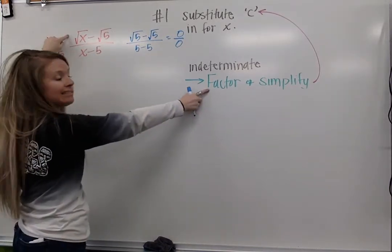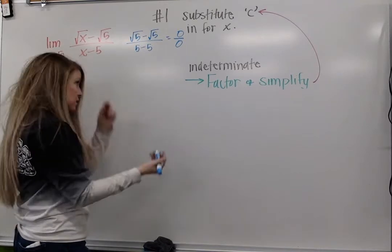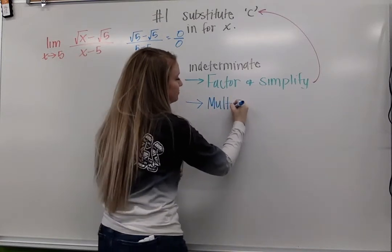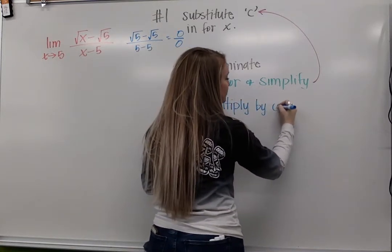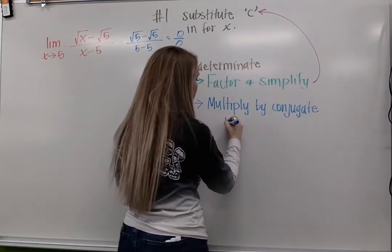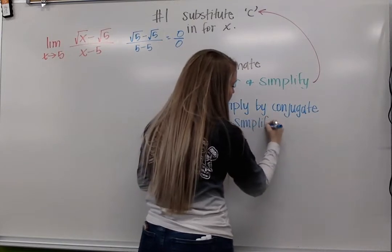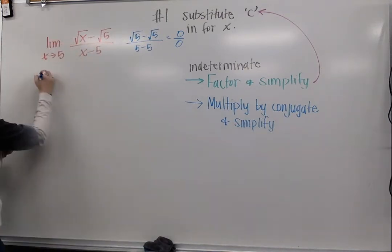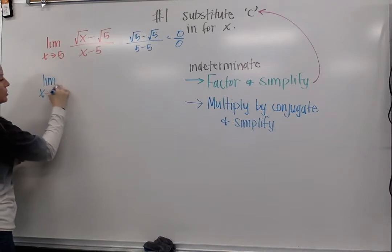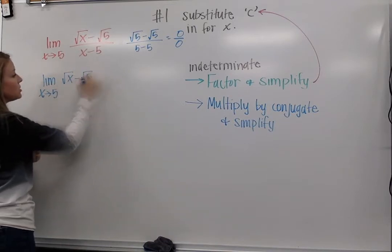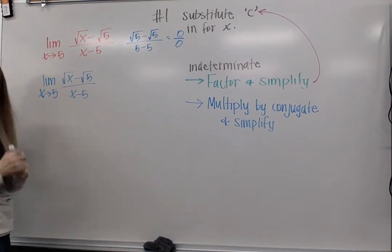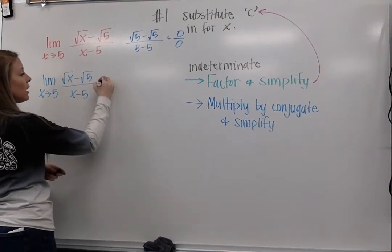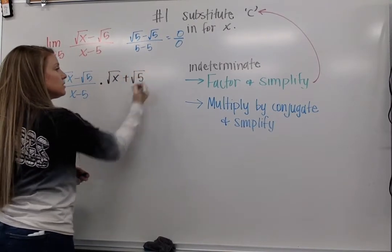In this case, factoring is not going to be a good idea. Because of those square roots — those radicals — I am going to multiply by my conjugate. This is another option: multiply by the conjugate and simplify. If you remember, a conjugate — we're just going to switch our signs. So I have the limit as x approaches 5 of (√x - √5) / (x - 5), and when I multiply by the conjugate, I'm just going to change this negative to a positive. So I'm going to multiply by (√x + √5).